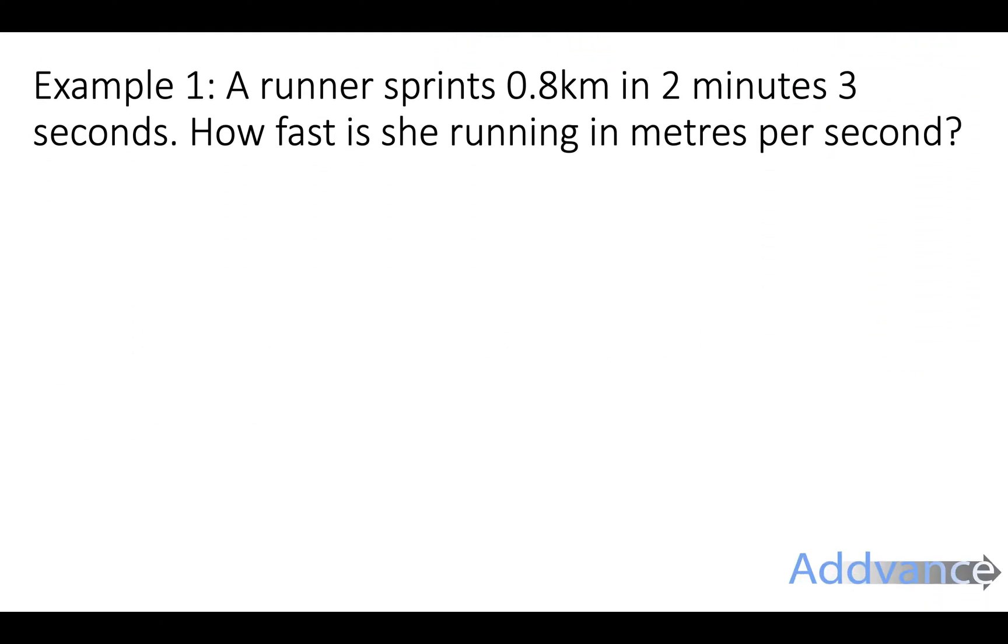A runner sprints 0.8 kilometers in 2 minutes 3 seconds. How fast is she running in meters per second? Well, this is a tricky one because it's asking for meters per second. So you want the distance in meters and you want the time in seconds because it says meters per second. And we need to remember that speed is the same as distance divided by time.